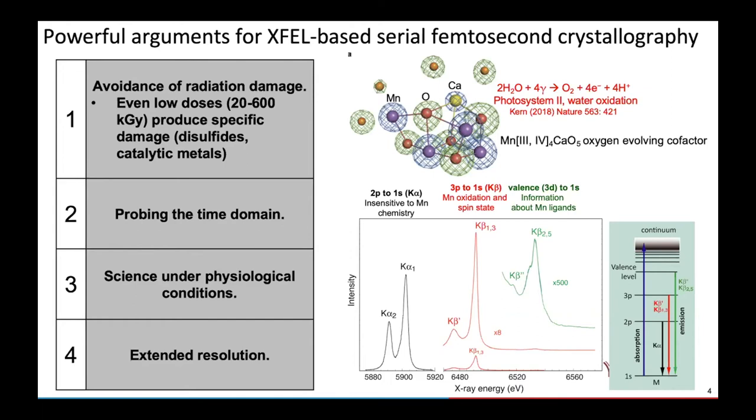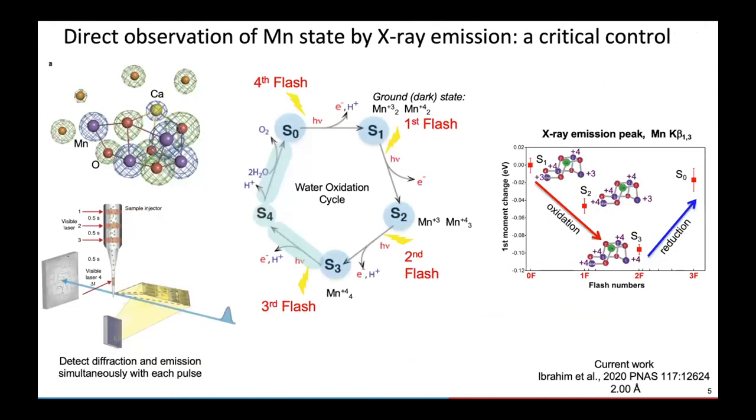In order to do this we have to do the entire experiment under physiological temperatures. We're very concerned with the X-ray damage possibility, so in order to control for that we're actually simultaneously looking at the K-beta emission line from manganese. This is an X-ray emission line that changes ever so slightly because it's coupled to the valence state of the manganese.